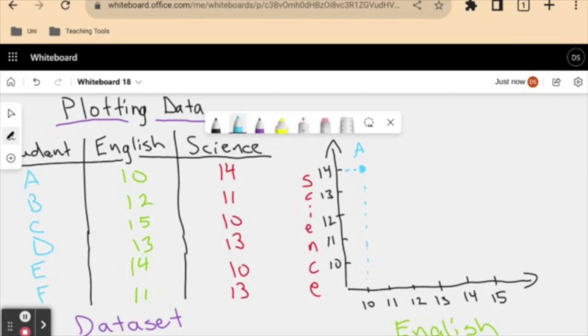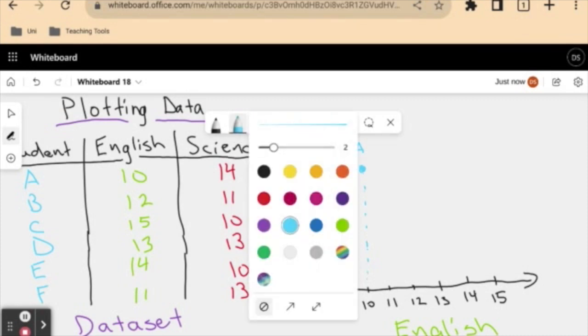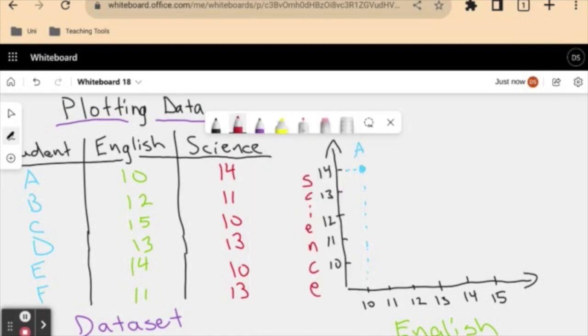So let's look at student B now. Student B got 12 in English and 11 in science. I can draw a point here for my student B.